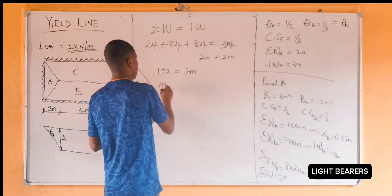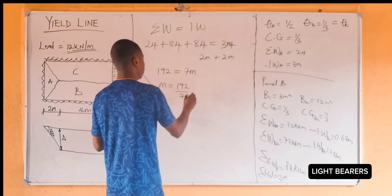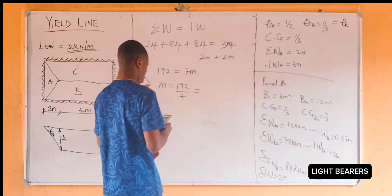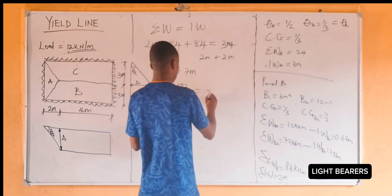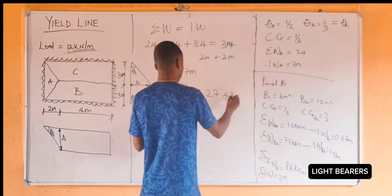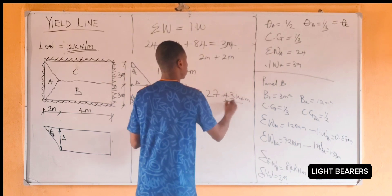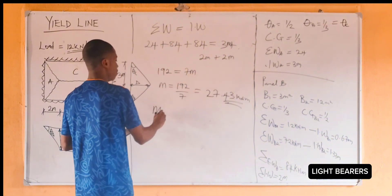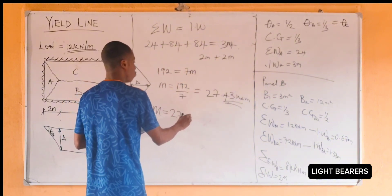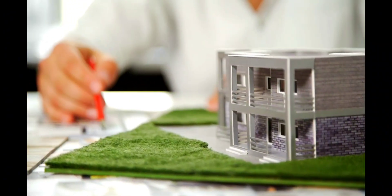Let's make M the subject of the formula. We have 192 over 7, which gives us 27.43 kNm. So our moment M equals 27.43 kNm.